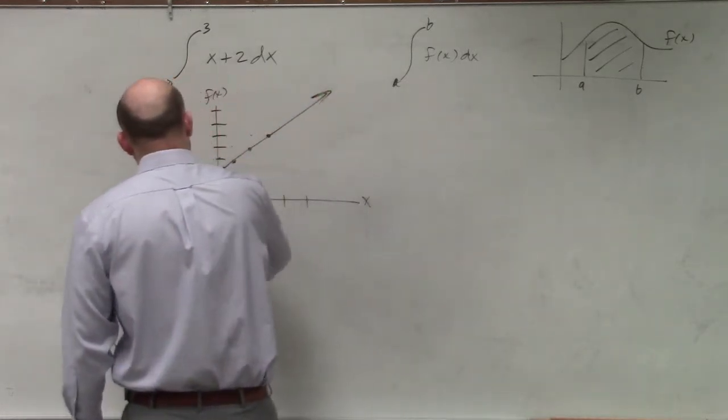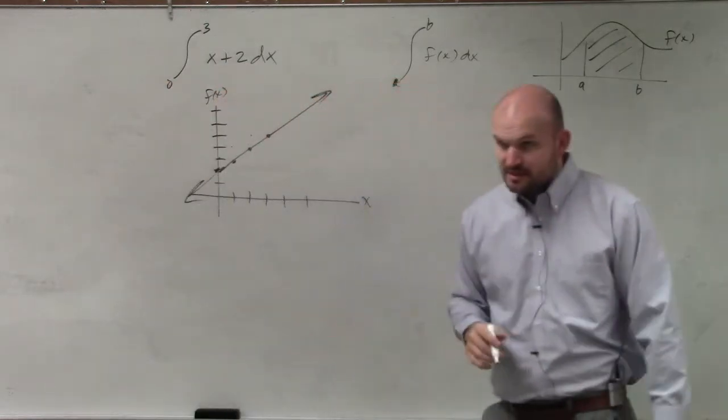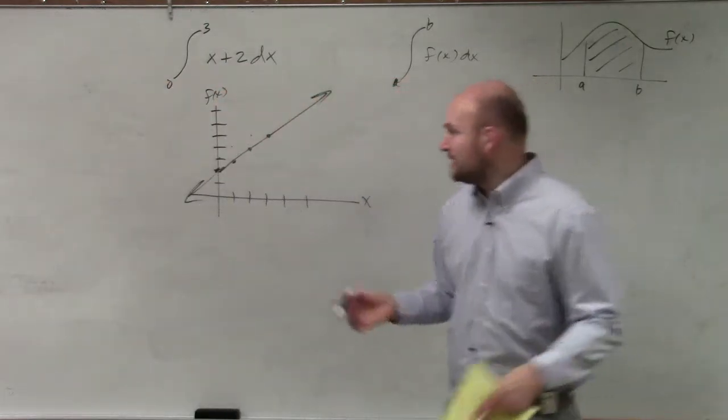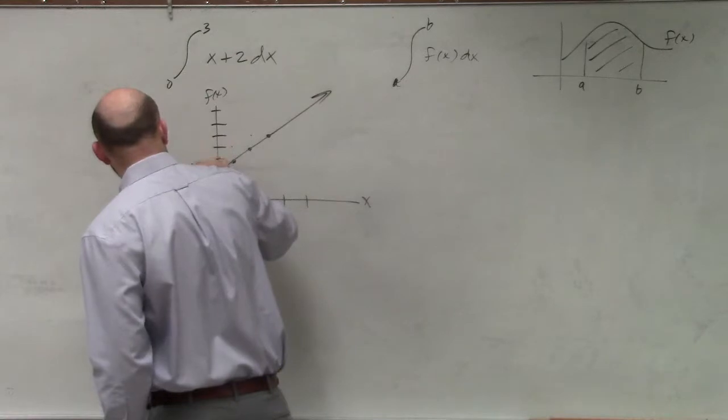So I know my function looks something like this, but I want to make sure I have my endpoints correct, though. This endpoint is 0, 2...